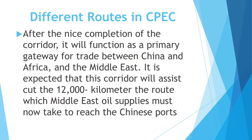Now moving to our next slide with the caption of different routes in CPEC. After the completion of the corridor, it will function as a primary gateway for trade between China and Africa and the Middle East. It is expected that this corridor will cut the 12,000-kilometer route which Middle East oil supplies must currently take to reach Chinese ports. The major point is that the construction of roads under CPEC will shorten the distance by 12,000 kilometers, hence cutting short expenses as well as time.